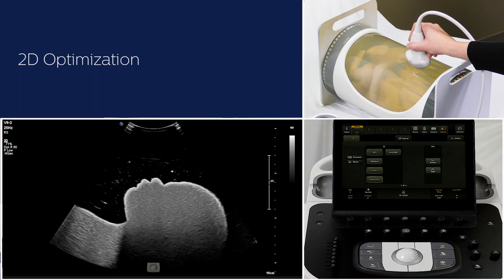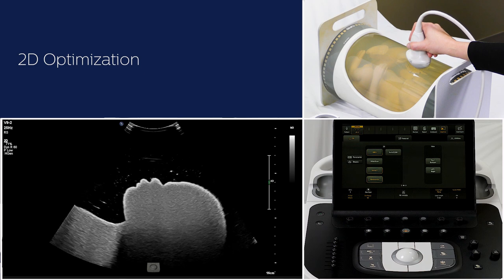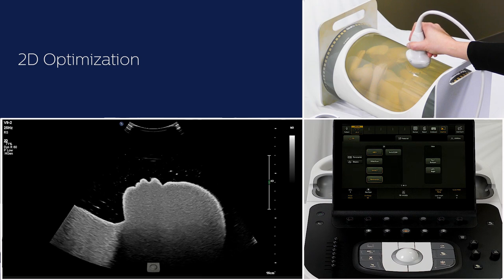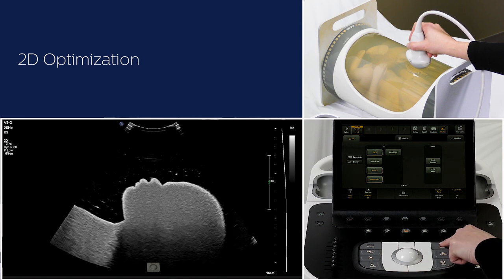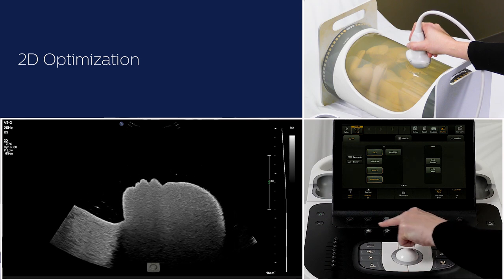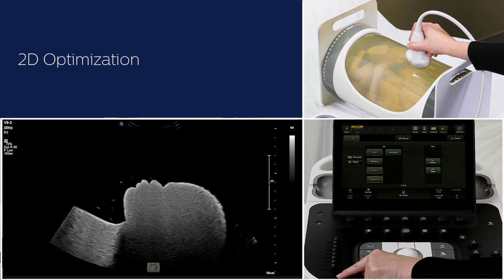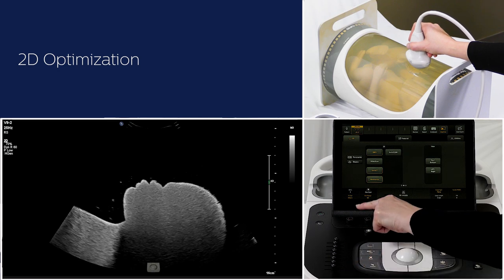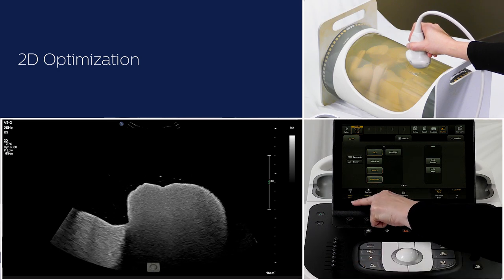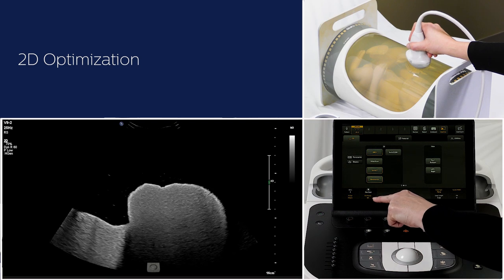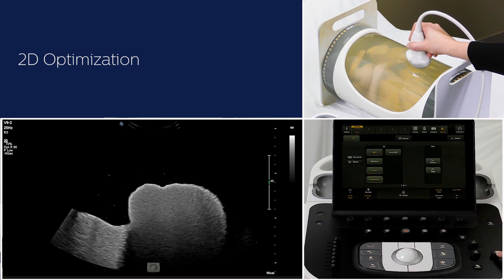Volume acquisition begins with optimal 2D imaging. This step is of utmost importance when acquiring a data set. The goal is to have a final volume data set with good resolution and optimal contrast. We can do this by pressing i-scan, which optimizes 2D gain and TGC, and or adjust settings such as X-rays, 2D opt, dynamic range, depth and focus.